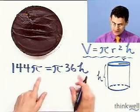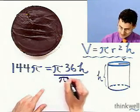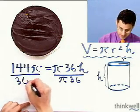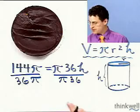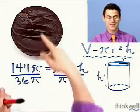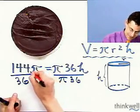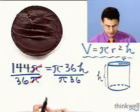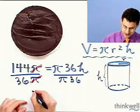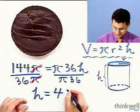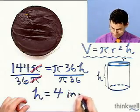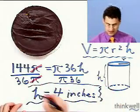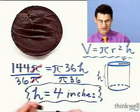Notice that we can divide both sides by pi times 36. The pi's cancel, and then I can divide 36 into 144, and I see that h equals 4 inches. So the height — this is a very tall Boston cream pie — the height is 4 inches.